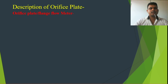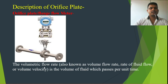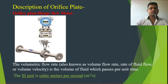Looking at the orifice plate flow meter: here you can see the pipe with a long, smooth straight run as mentioned — necessary for correct flow measurement. The nipple connects with tubing to connect to the orifice meter. The orifice plate is installed in between the flanges. The volumetric flow rate, also known as volume flow rate or volume velocity, is the volume of fluid which passes per unit time. The SI unit is cubic meters per second.